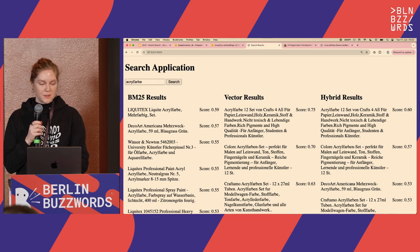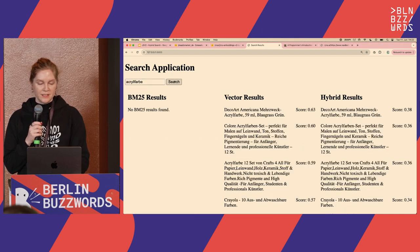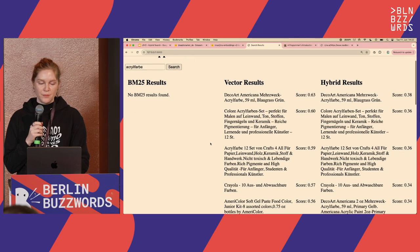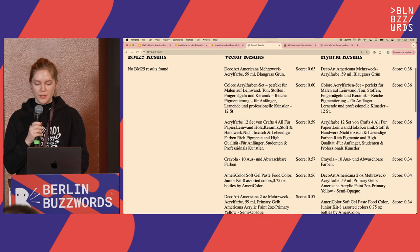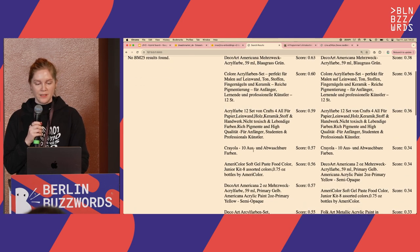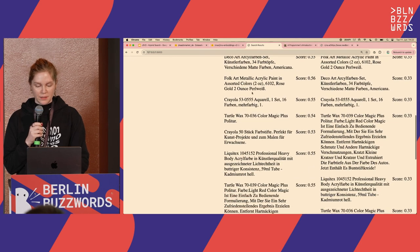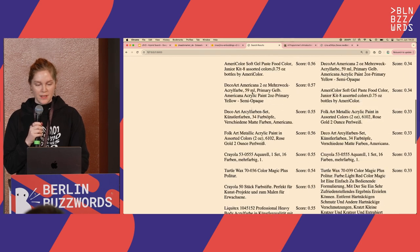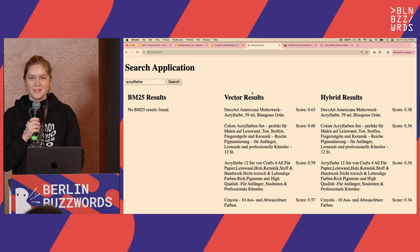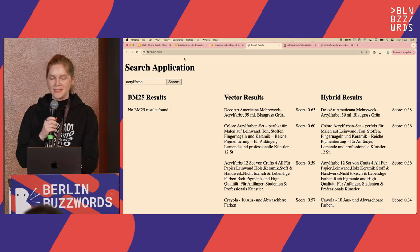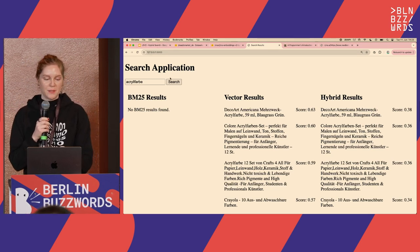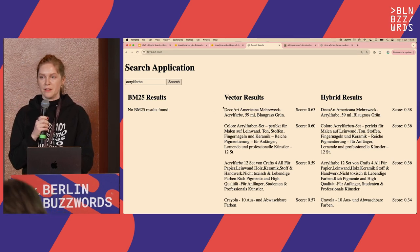If I introduce a spelling mistake in the query, BM25 returns no results at all, whereas vector search still returns relevant results and handles the misspelling quite nicely. It's a small toy example, but it demonstrates how you can use the bilingual model in a hybrid search setting.